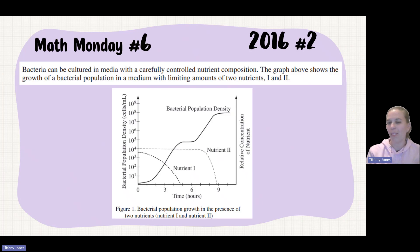The bacteria can be cultured in media with carefully controlled nutrient composition. The graph below shows the growth of bacterial population in media with limiting amounts of nutrients one and two. So this is what we call a double y-axis. And I did want to point that out to you. On the left-hand side, we see the bacterial population density in cells per milliliter.